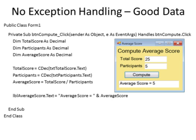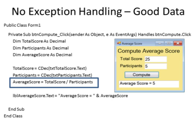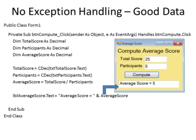Here is an example for a different program. This program is going to read the total score for a class and then divide it by the number of participants. For example, if the total score is 25 and the number of participants is 5, the program will divide the total score by the number of participants and compute the average score, which is going to be 5.